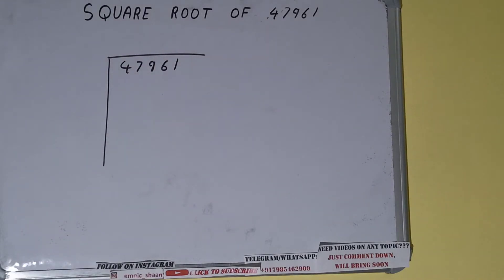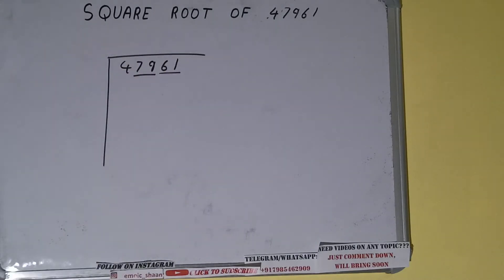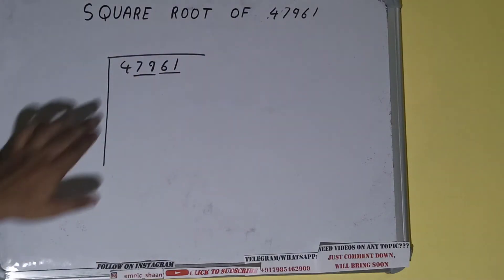The next thing we need to do is form pairs from the right-hand side. So one pair will be 61, one pair will be 79, and this 4 will be left out. First we'll divide this 4, then we'll bring down the pairs.